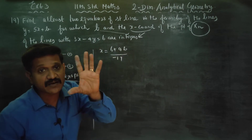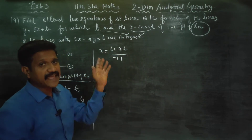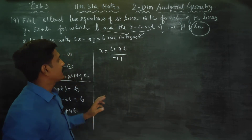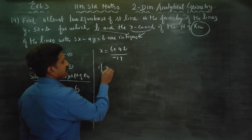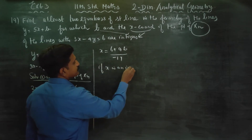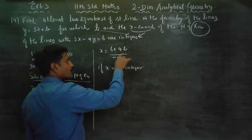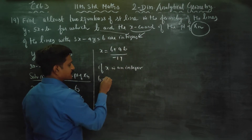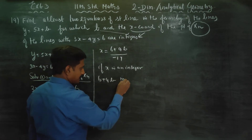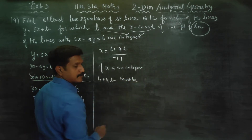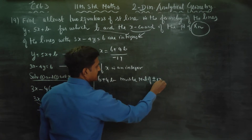The condition is: x must be an integer. Since x = (6 + 4b) / (−17), even if a fraction appears, x must still be an integer. For x to be an integer, the numerator (6 + 4b) must be a multiple of plus or minus 17.